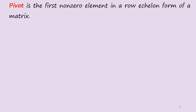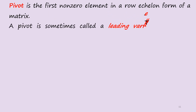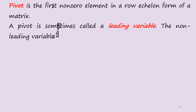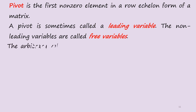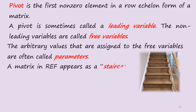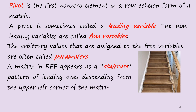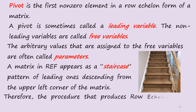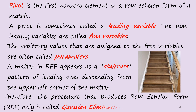Key terminologies: a pivot is the first non-zero element in a row echelon form of a matrix, sometimes called a leading variable. Non-leading variables are called free variables. The arbitrary values assigned to free variables are often called parameters. A matrix in REF appears as a staircase pattern of leading ones descending from the upper left corner. The procedure that produces REF is called Gaussian elimination.